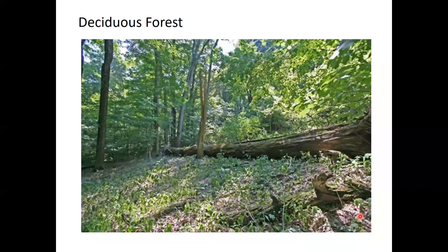Next is the deciduous forest biome. In this biome you can have both pine trees — evergreen trees — and deciduous trees, or trees that drop their leaves. There's quite a lot of rain, and you can see that by the fact that the trees grow very tall, and there's a higher biodiversity than either of the biomes we've seen previously.